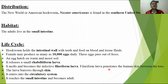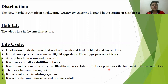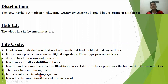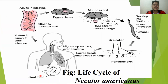The filariform larvae penetrate the human skin. When they penetrate the skin, they enter the body. They can enter through bare skin — for example, if you walk barefoot on contaminated soil. After penetrating, the filariform larvae travel through the circulatory system, reach the small intestine, where they become adult worms. After reaching adulthood, mating occurs between male and female. This is the life cycle of Necator americanus.